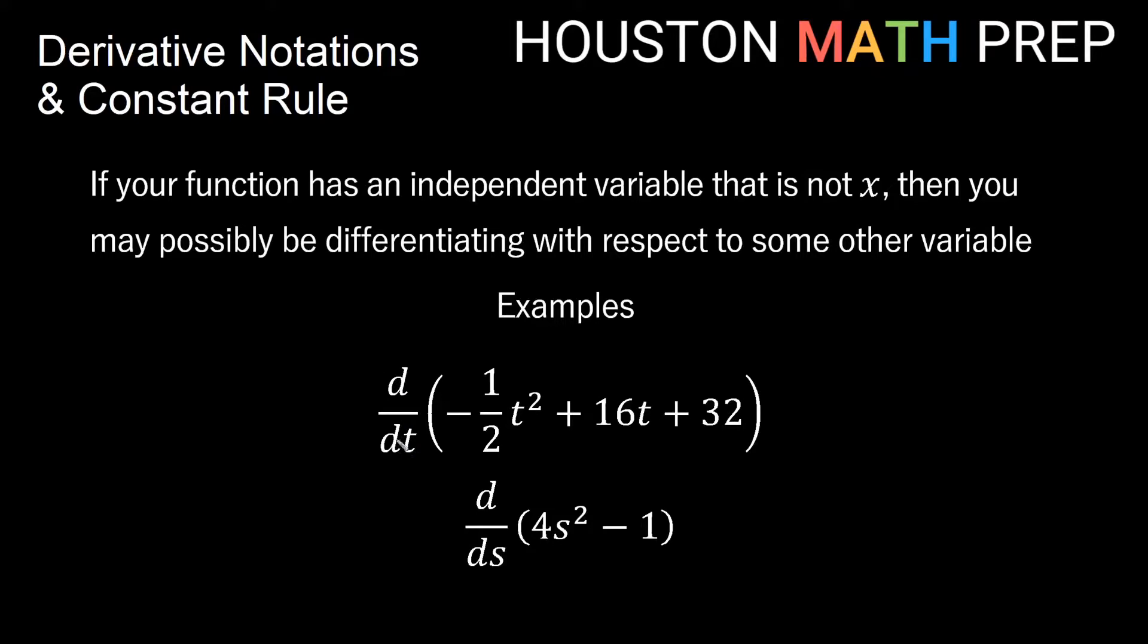Also if I have something like 4s squared plus 1, then we would take the derivative likely with respect to s. So d/ds derivative with respect to s of 4s squared minus 1.